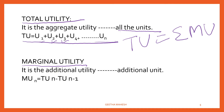What is marginal utility? It is the additional utility derived by a consumer by consuming an additional unit of a commodity. It deals with a single unit. Symbolically we can write: marginal utility n equals total utility n minus total utility n minus 1.